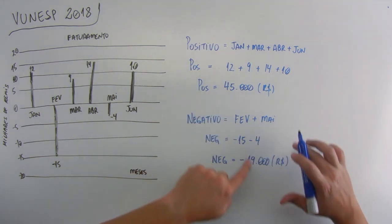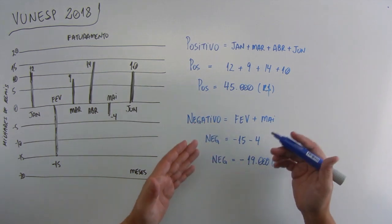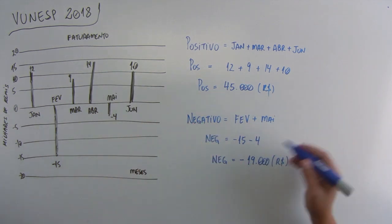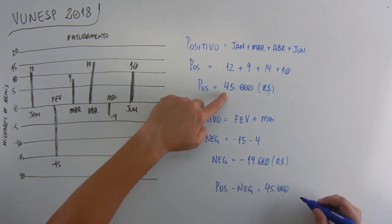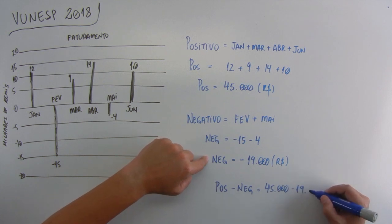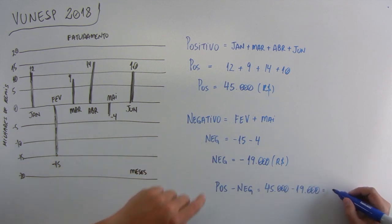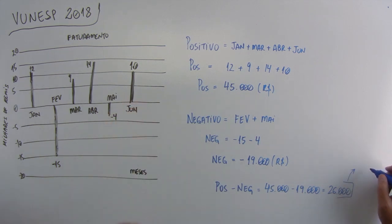Como isso foi positivo e esse foi negativo, tem que ver quanto que realmente sobrou. Então positivo menos negativo, 45 mil menos os 19 mil, vai dar o saldo de 26 mil positivo, que ele já disse. E 26 mil está na alternativa B.